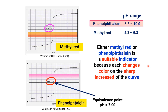A strong acid–strong base titration can be performed using either methyl red or phenolphthalein as the indicator. Methyl red changes color in the pH range 4.2 to 6.3 — it appears red in acidic solution and colorless in basic solution. Phenolphthalein changes color in the pH range 8.3 to 10 — it appears pink in basic solution and colorless in acidic solution. Both indicators change color on the sharp increase on the curve.